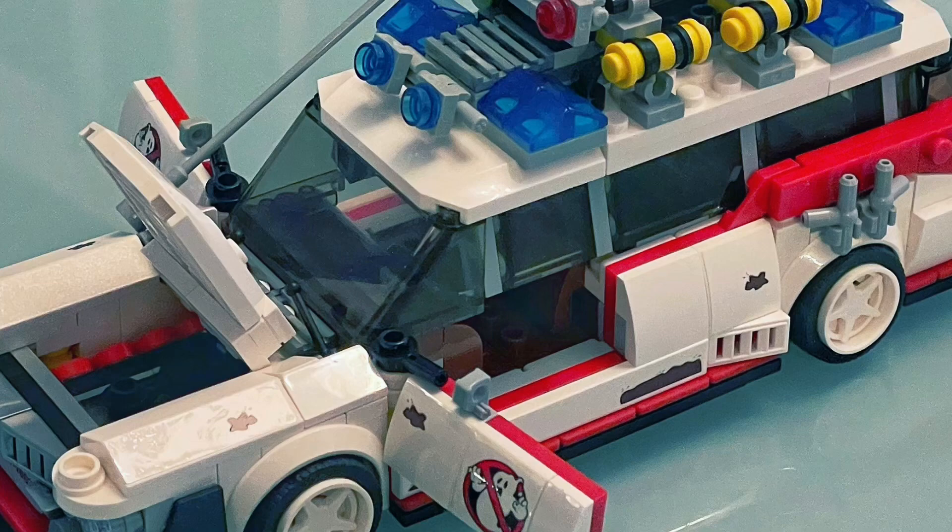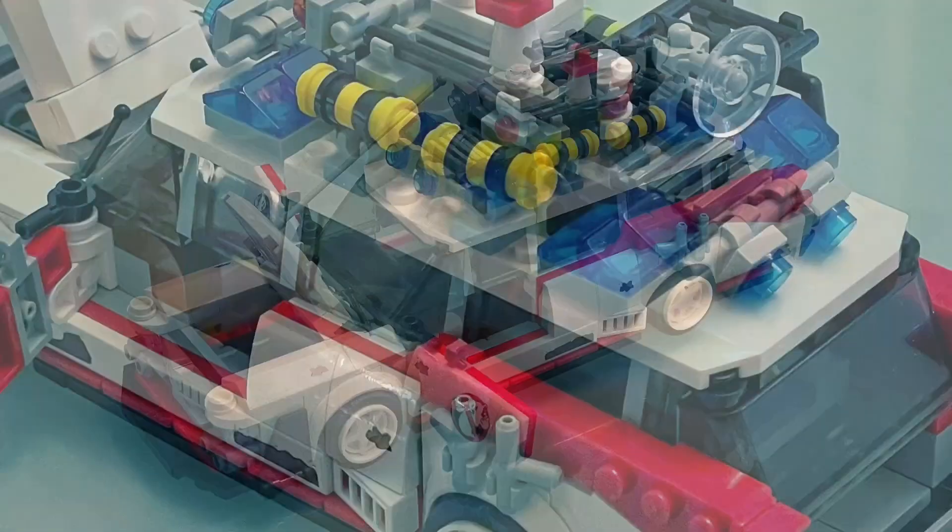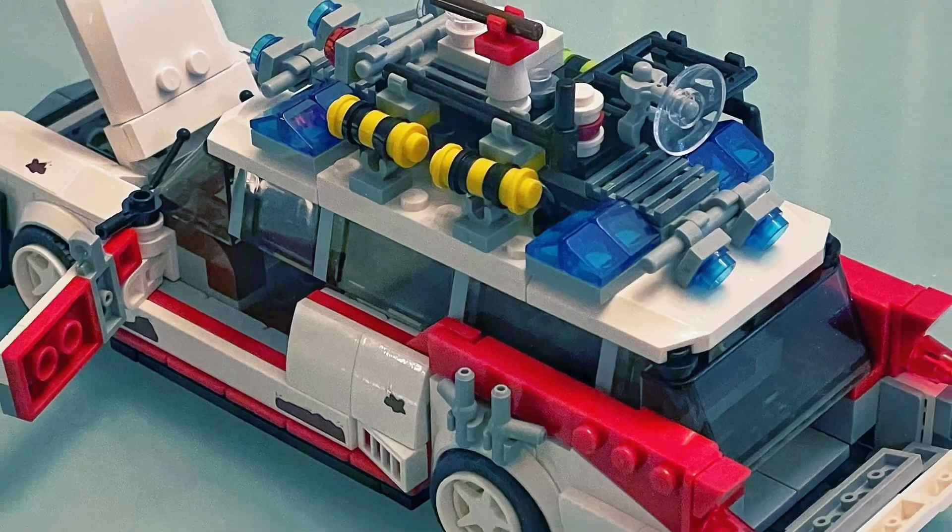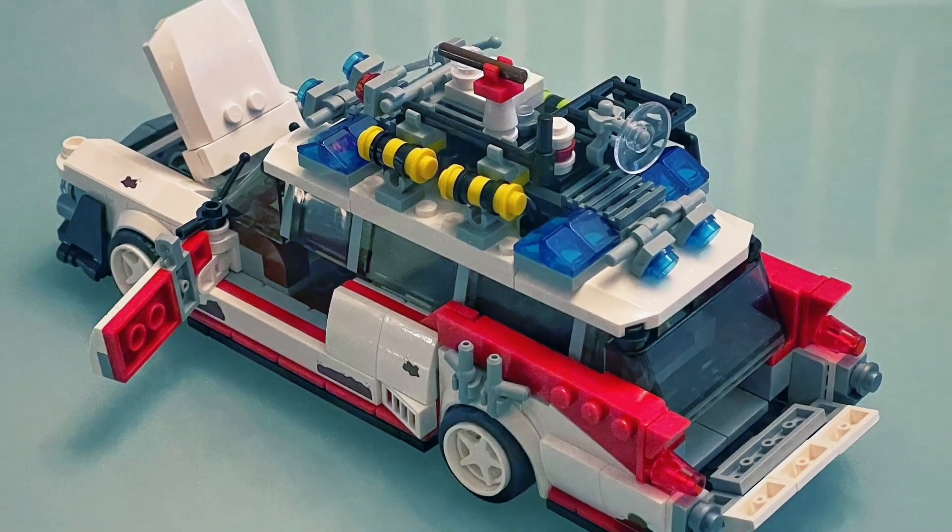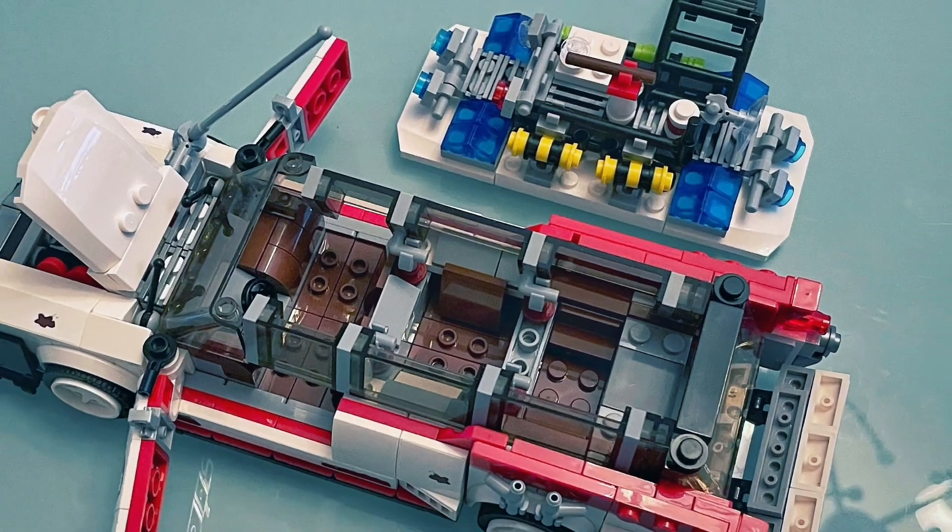As you can see in the pictures, the set is very detailed for this size. The doors, hood, and rear hatch can be opened. The roof can also be removed to reveal some interior details.